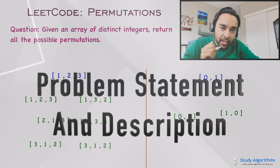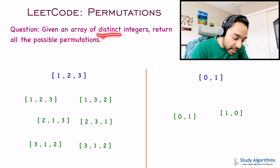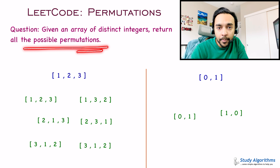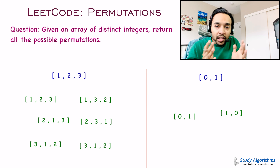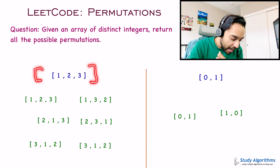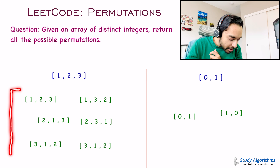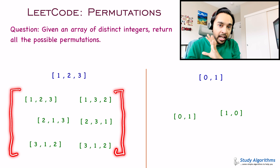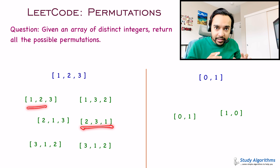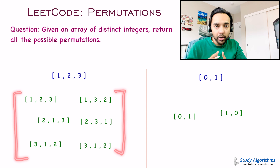Let us quickly make sure that we are understanding the problem statement correctly. You are given an array of distinct integers and you have to return all the possible permutations. Permutations simply mean all the different ways you can arrange the elements. So given our first test case, I have the elements one, two and three. Notice that they are all different, and the number of ways you can arrange these elements is six. No two arrangements are the same, so for this test case, all of these arrangements should be your answer.